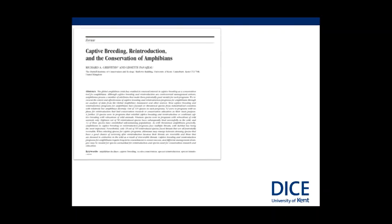Before the ACAP came out, we published a paper based on Niseth Kavagel's work, where we reviewed the range of captive breeding, reintroduction, and conservation programs of amphibians: where they were occurring, how successful they were, and whether there were taxonomic biases. By coincidence, this study fell quite neatly into what we might call the pre-ACAP period, covering studies from about 1966 up until about 2006.